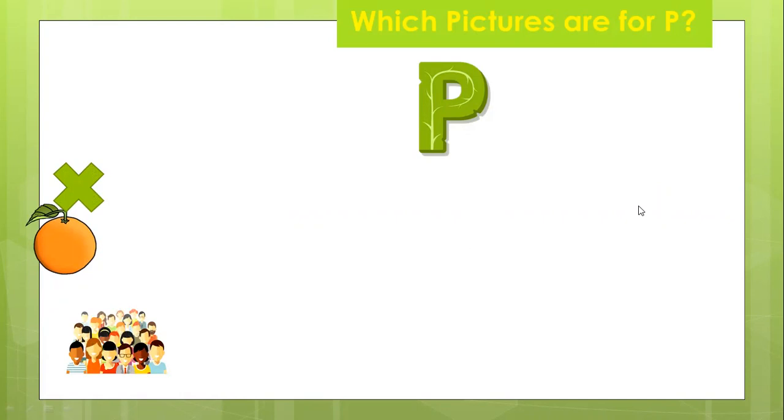Is P for people? Yeah. You can see a lot of people here. See? P is for people. And P is for pipe. Am I right? Yes. It's a water pipe.